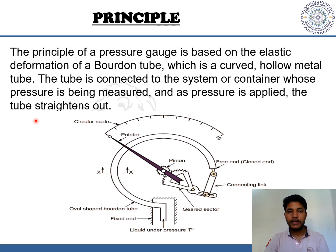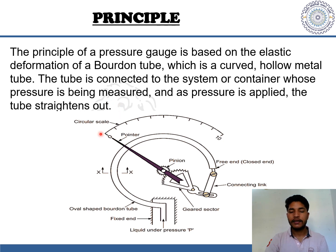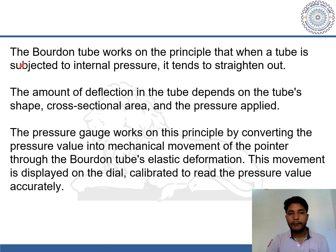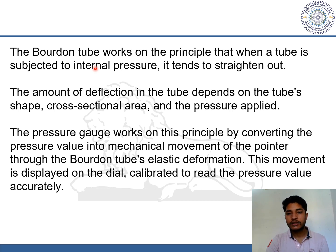The principle of a pressure gauge is based on the elastic deformation of a Bourdon tube. The tube is connected to the system or container whose pressure is being measured, and as pressure is applied, the tube straightens out. We can see it in the diagram too. The Bourdon tube works on the principle that when a tube is subjected to internal pressure, it tends to straighten out.